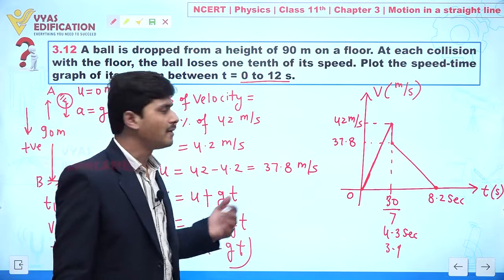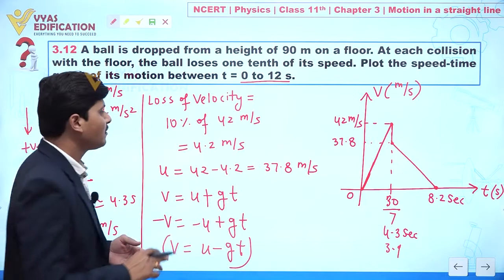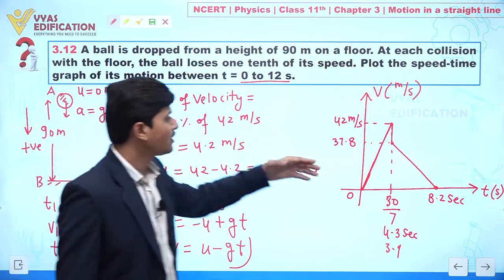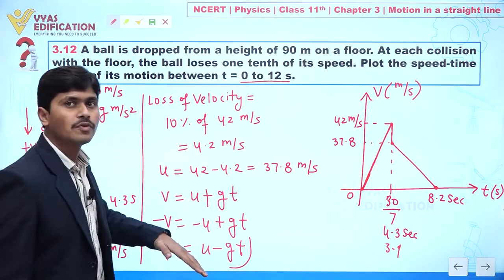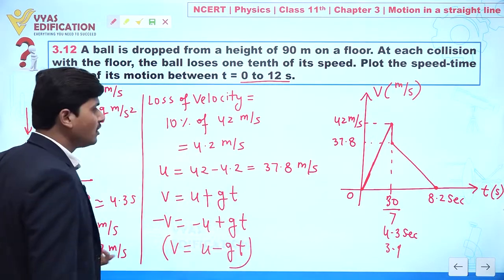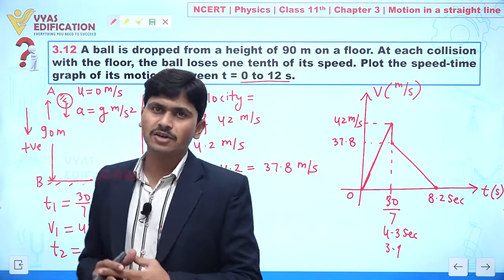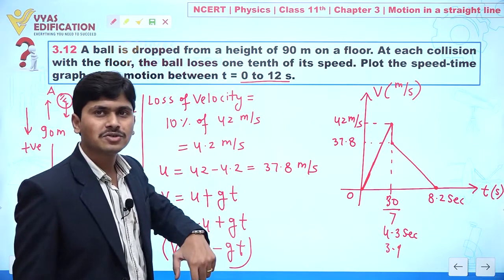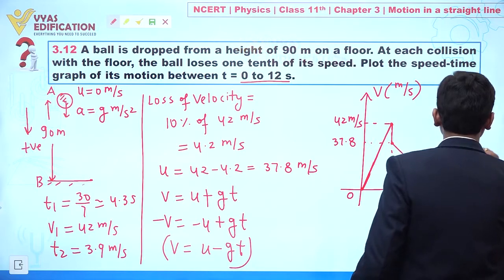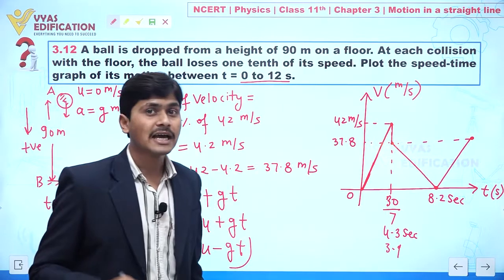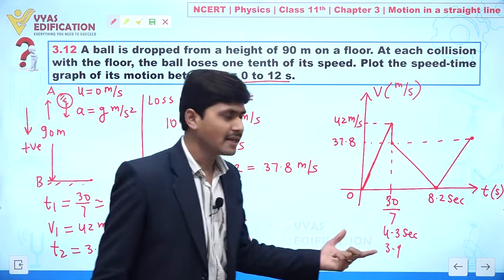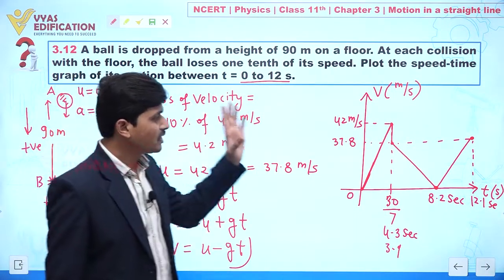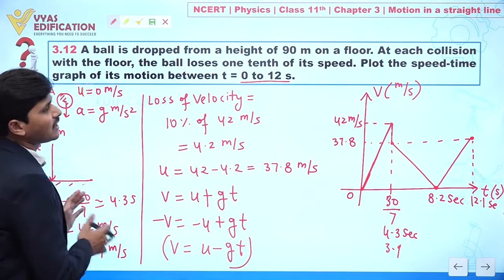We need to draw the graph between t equal to 0 to 12 seconds. The initial rebound velocity is 37.8 meters per second, with total time of ascent equal to 3.9 seconds. Since drag is absent, time of descent equals time of ascent, so the body again reaches ground with the same velocity. Adding 8.2 plus 3.9 equals 12.1 seconds. We can draw the complete speed-time graph. This problem is now clear.